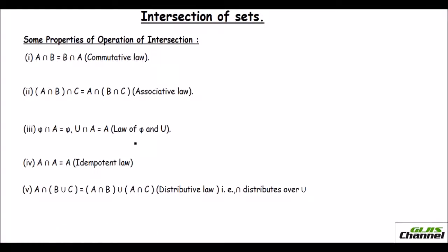This is the law of empty set and the law of the universal set. Then the next one says A intersection A is A, and the last one is the distributive law where A intersection (B union C) is equal to (A intersection B) union (A intersection C).